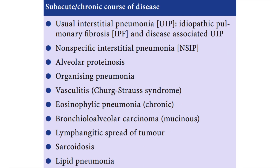The differential diagnosis for acute crazy paving includes pulmonary edema, primary infections, pulmonary hemorrhage, acute interstitial pneumonia, ARDS, and others. In subacute cases it is more likely usual interstitial pattern, non-specific interstitial pattern, alveolar proteinosis, organizing pneumonia, vasculitis, and others.